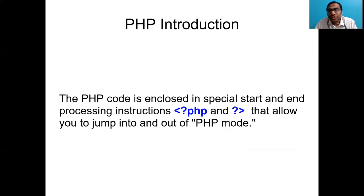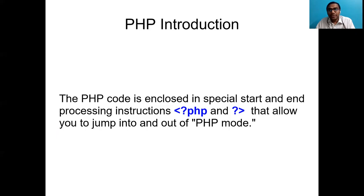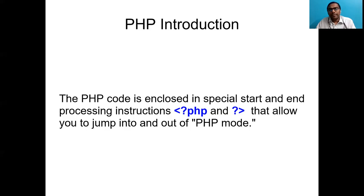How do we start with PHP? When starting another programming language like C, we begin with header files. Similarly, for PHP we need a specific syntactic structure. We start the PHP code with a special start processing instruction: an angular bracket followed by a question mark and then 'php'. We end the PHP script with a question mark followed by an angular bracket. This marks where the PHP code starts and ends — we can call it PHP mode on and PHP mode off.